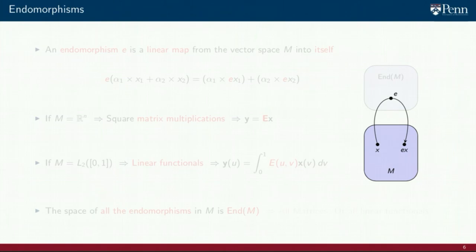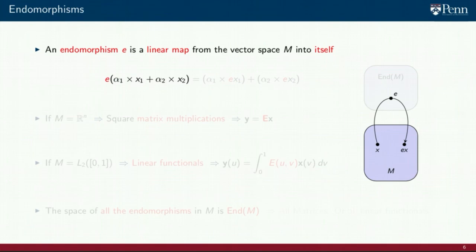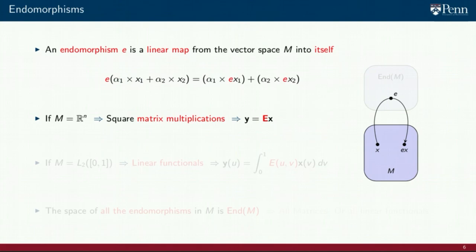The important operation missing from a vector space is the notion of a linear transformation. This is where algebras in general, and endomorphisms in particular, come into the picture. An endomorphism E is simply a linear map from the vector space M into itself. That the map E is linear means that applying E to a linear combination of elements x1 and x2 results in the respective linear combination of the results of applying E to x1 and x2.